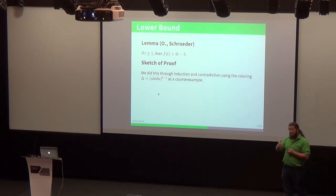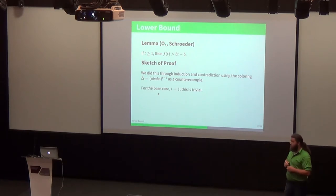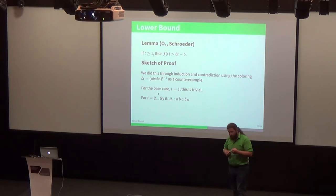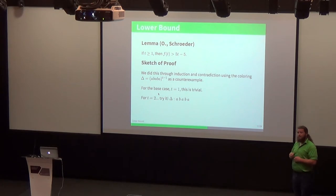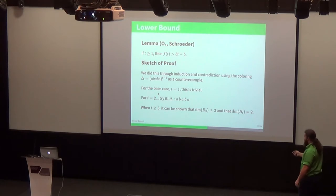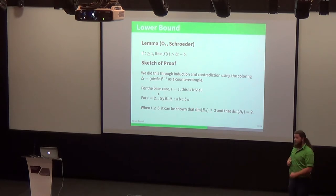The lower bound that we were able to find was that if t was any positive integer, then f(t) is greater than 5t minus 5. That means we need at least 5t minus 4 characters to ensure this t permissibility. We did this through induction and contradiction on the coloring ABABA repeated t minus 1 times. For t equals 2, what we have is just ABABA. What we want to find are two sets that don't overlap, they're monochromatic, and their diameter is non-decreasing. You're welcome to try it, but I'll give you a spoiler: you're not going to find one. In fact, you can't do this for any t larger than 3 because our second set has diameter 3, but the final set in our group has diameter 2, which violates our non-decreasing diameter condition.